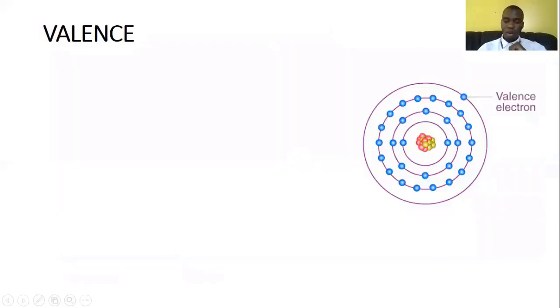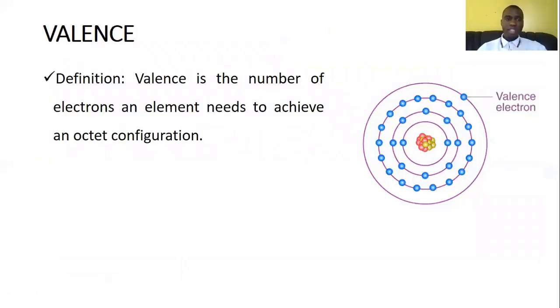What is valency? We are saying valency is simply the number of electrons an element needs to achieve an octet configuration. In other words, to achieve stability. Now, an octet configuration is a situation where the outermost shell of an element has eight electrons. That's what octet means. It simply means it has a total number of eight electrons, which means it's completely filled up.